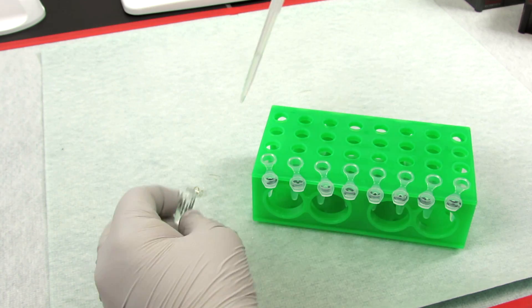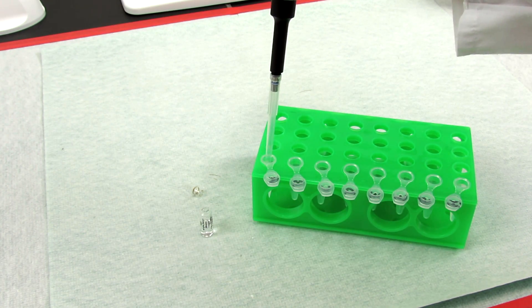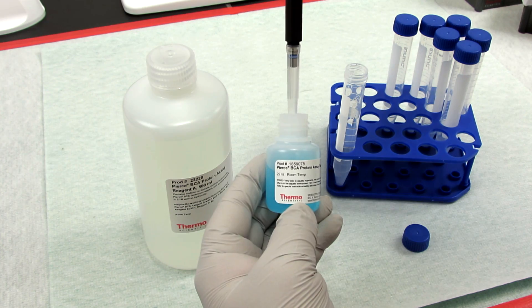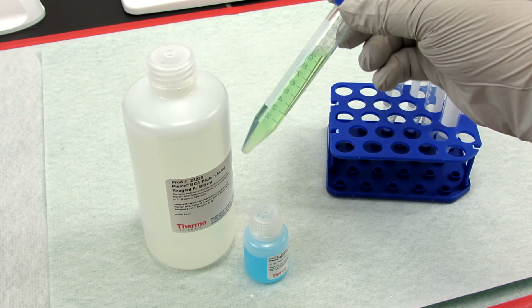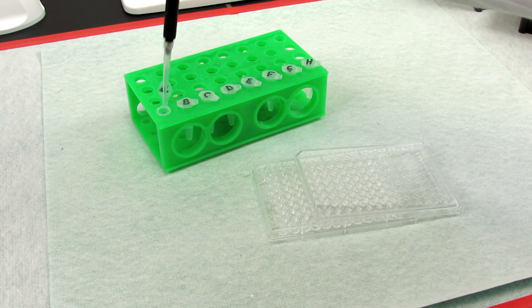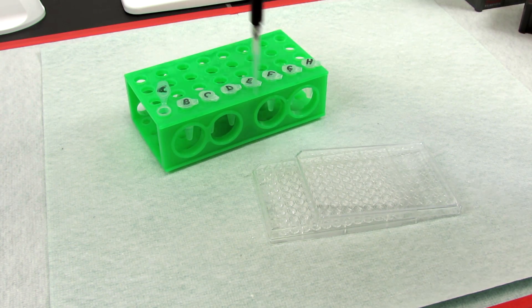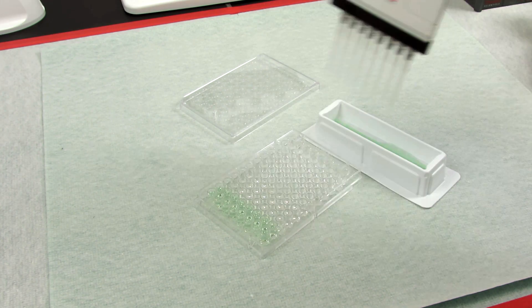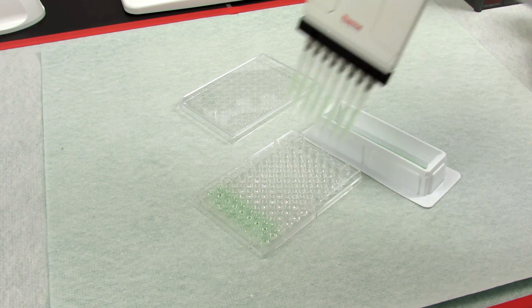After diluting the BSA standard, prepare the BCA working reagent by combining reagents A and B at a 50 to 1 ratio, and pipette 25 microliters of each standard or sample into a microplate well, followed by 200 microliters of the BCA working reagent.